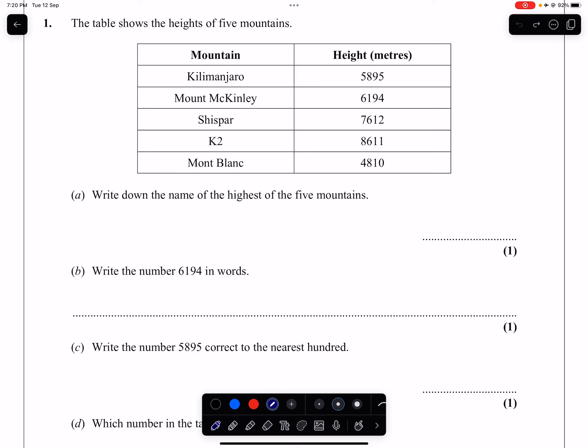Question 1. The table shows the heights of 5 mountains, in metres: Kilimanjaro 5,895, and so on and so forth.